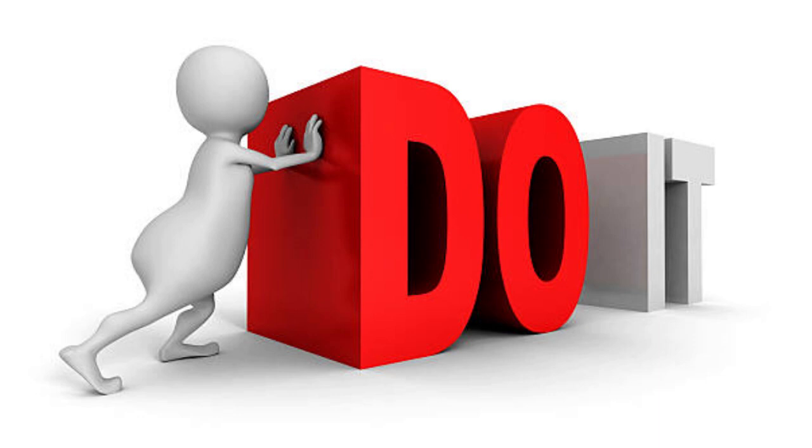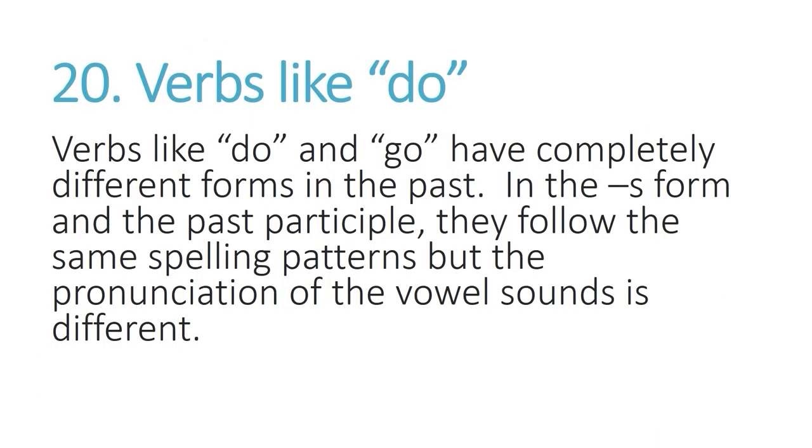Verbs like DO and GO have completely different forms in the past. In the S form and the past participle they follow the same spelling patterns but the pronunciation of the vowel sounds is different. Let's look at the examples.